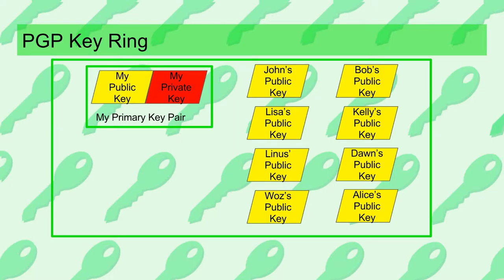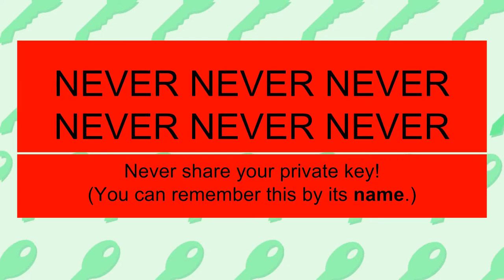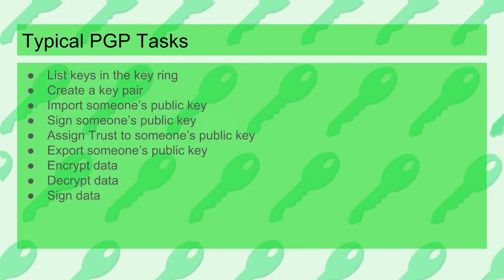Let's talk about the PGP key ring. GPG manages a virtual key ring where you store your public-private key pairs and also your colleagues' public keys — it's a database that GPG maintains. Once you receive a public key from a colleague, you put it into your key ring, and only then can GPG use it in its operations. Managing your key ring is something you'll do on a regular basis. The private key is the one you keep to yourself — you can remember it by its name.